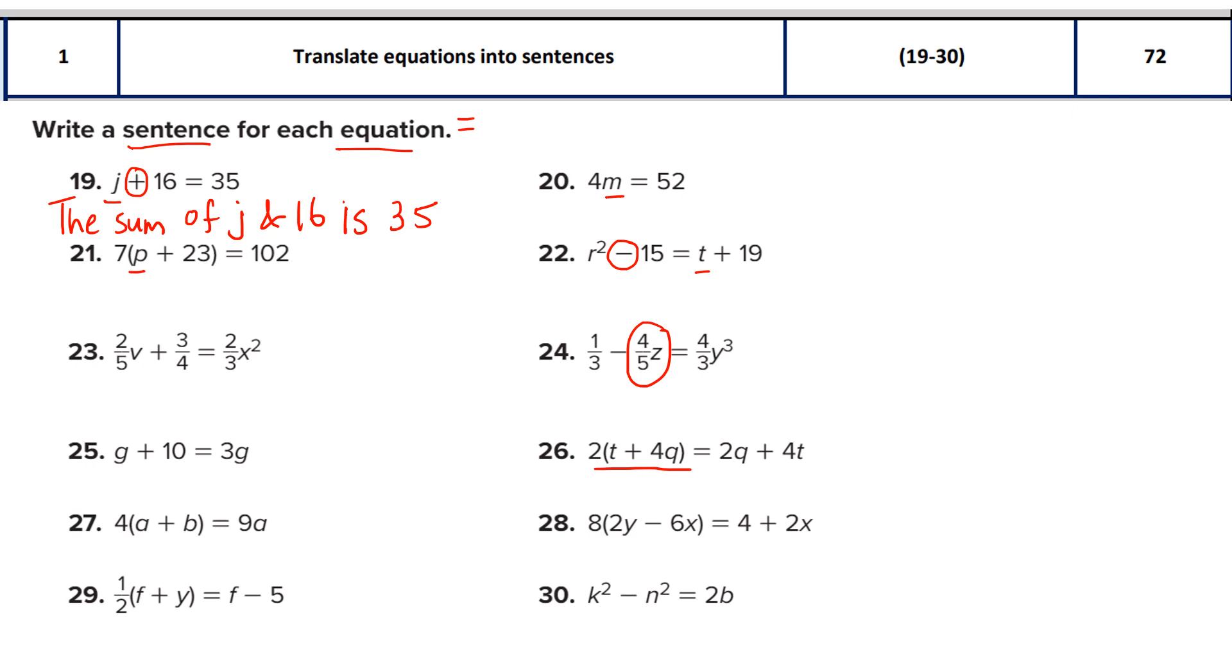One way is also that you can convert the numbers into words. You may replace 16 with the word sixteen, or similarly convert 35 into thirty-five. For question 20, you see multiplication. Either you can write 4 multiplied with m is equal to 52, or you may also write 4 times m is equal to 52. Both are going to be correct.